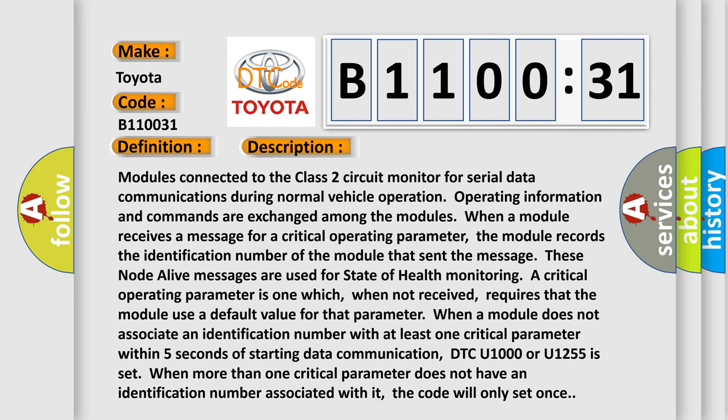When a module receives a message for a critical operating parameter, the module records the identification number of the module that sent the message. These node alive messages are used for state of health.